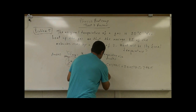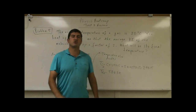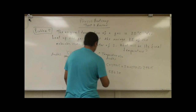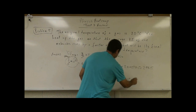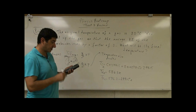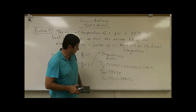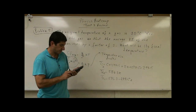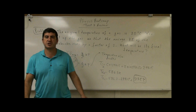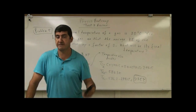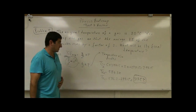293.15 doubled gives a final temperature in Kelvin of 586.3 Kelvin. Then you have to convert back to Celsius. The final temperature in Celsius is 586.3 minus 273.15. So if the original gas is 20 degrees Celsius and you double the kinetic energy of the molecules, the final temperature will be approximately 313 degrees Celsius.